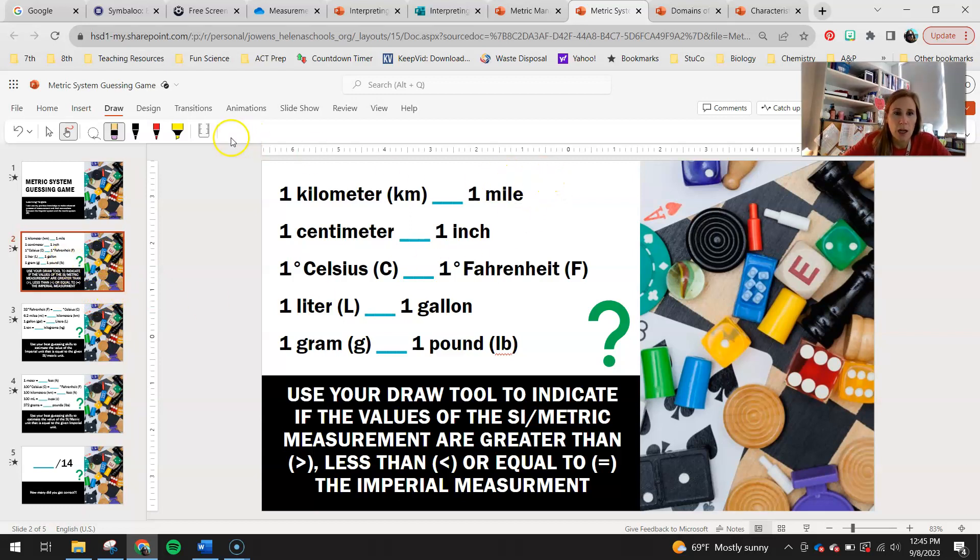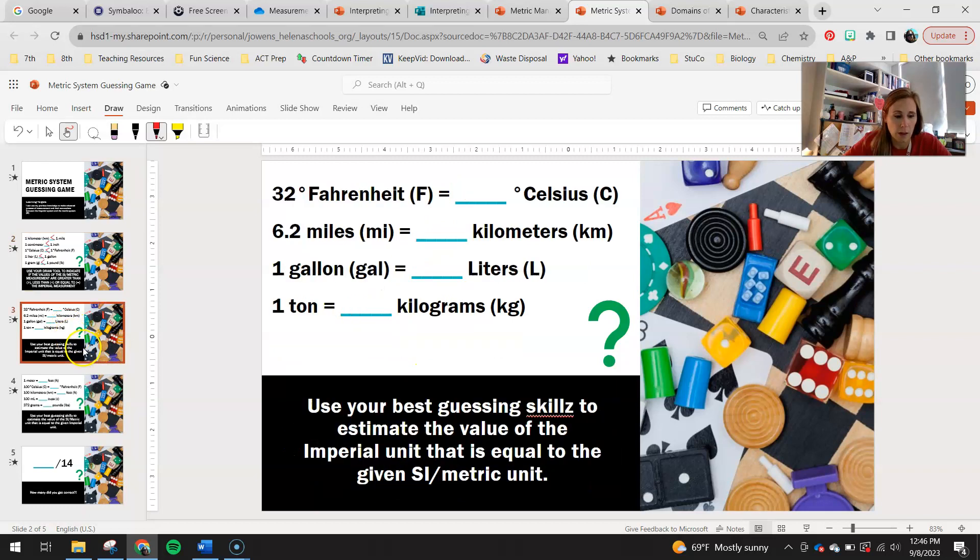Alright, so first one, 1 kilometer is less than 1 mile. So 1 mile is a further distance to run. 1 centimeter is less than 1 inch. If you look at a ruler, 1 inch is about yay big versus 1 centimeter is about that big. 1 degree Celsius is less than 1 degree Fahrenheit. 1 liter is less than a gallon. Like I said, liters are about the same size as a quart, and there's about 4 quarts to a gallon. And then 1 gram is less than 1 pound. So all of those are the less than sign there.